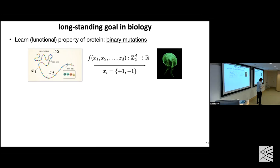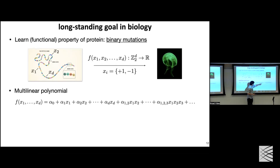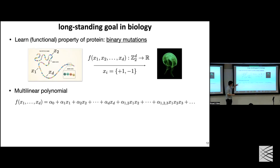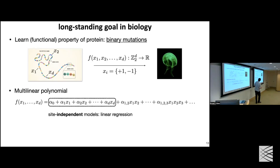This function f is the pseudo-boolean function: inputs are binary, mapping from a binary hypercube to a real number. What we know from discrete mathematics is that any f, no matter how complex — it could be the function of any protein — can be written as a polynomial. Specifically, it's a multilinear polynomial where monomials look like x_1, x_1·x_2, with no exponents, because x_i to any odd power equals itself and to any even power equals 1. There are first-order, second-order, third-order terms, all the way up to d-th order.